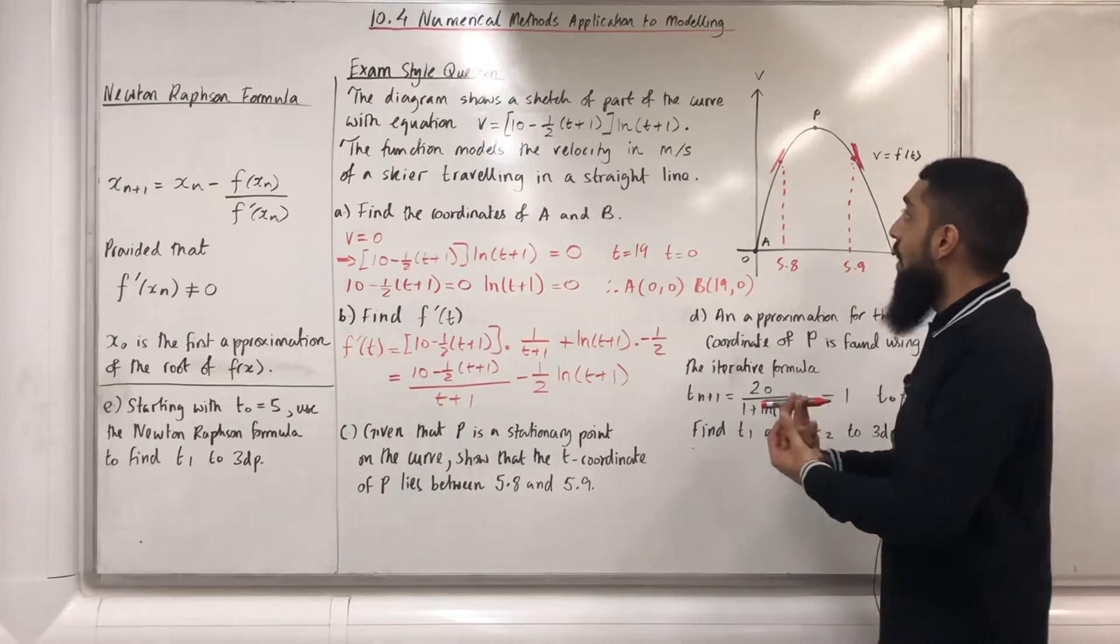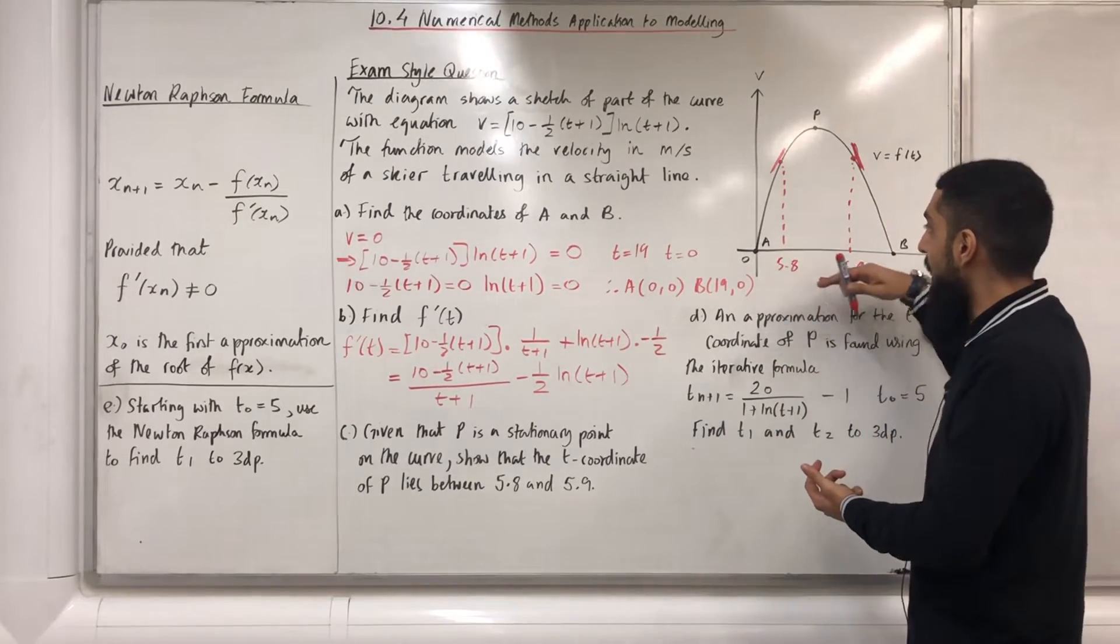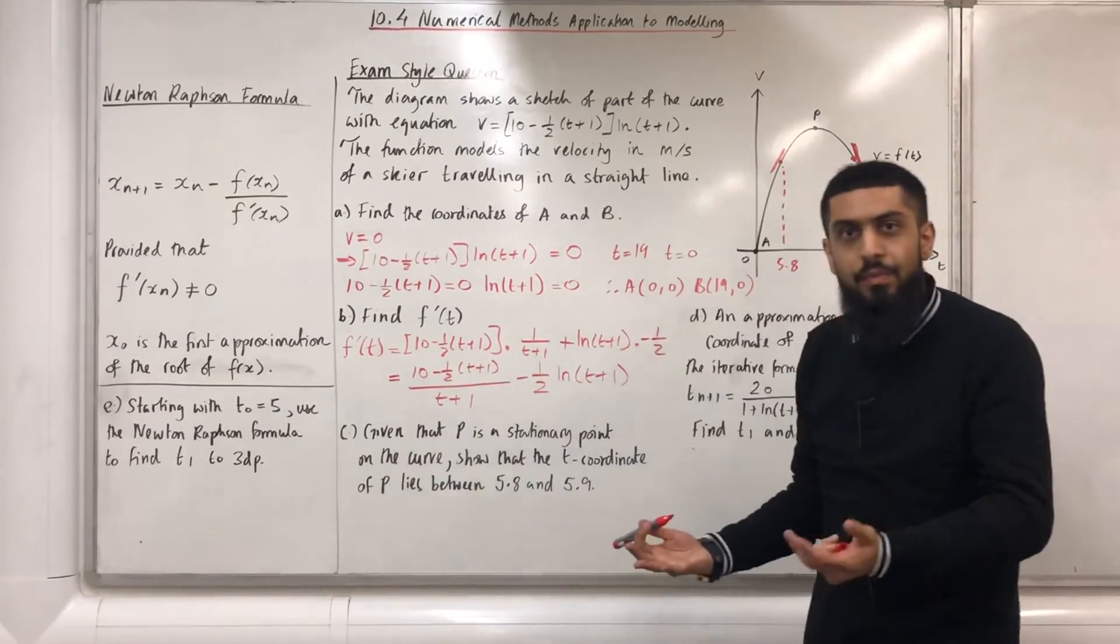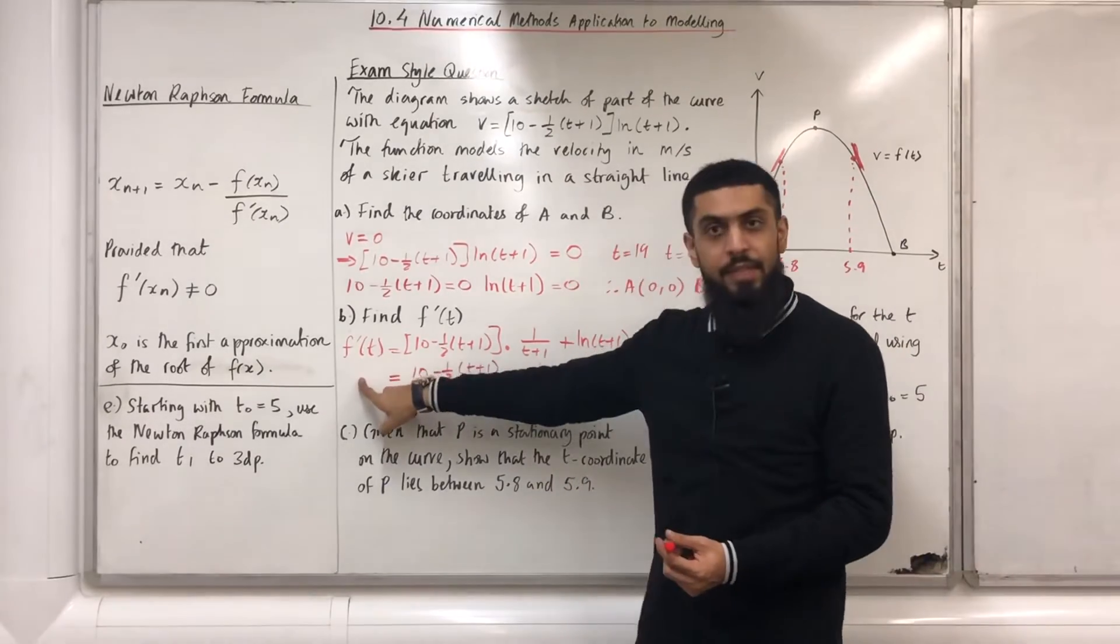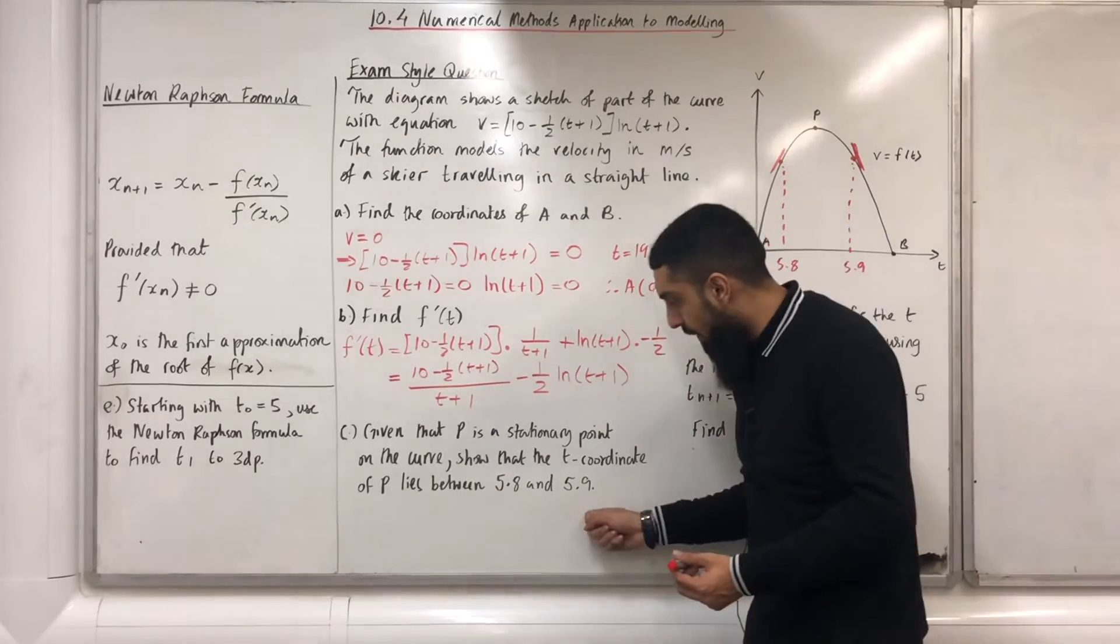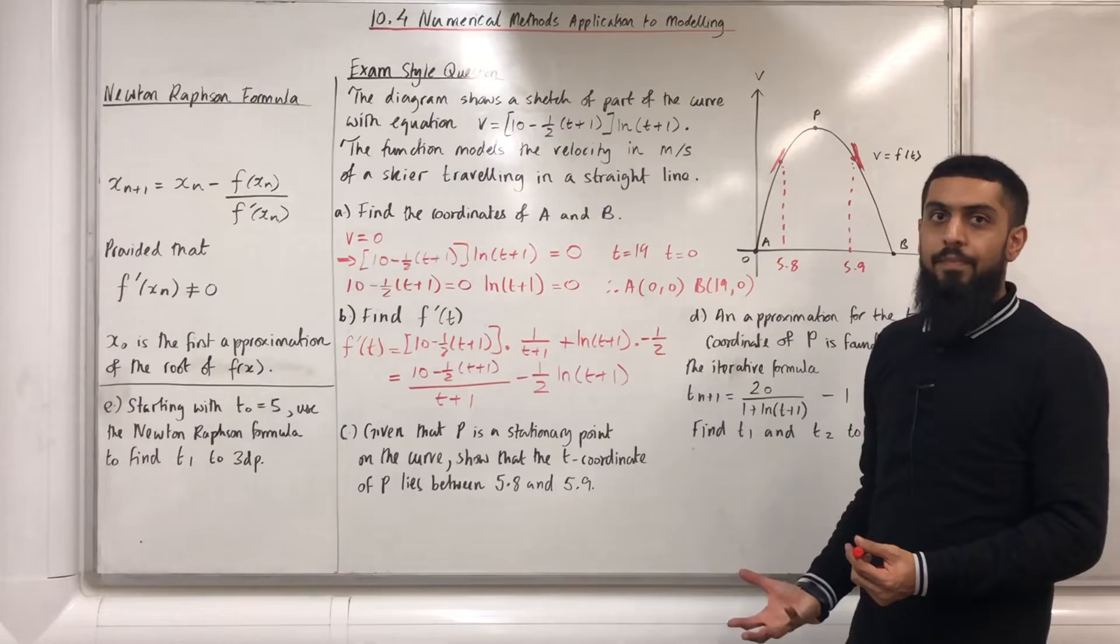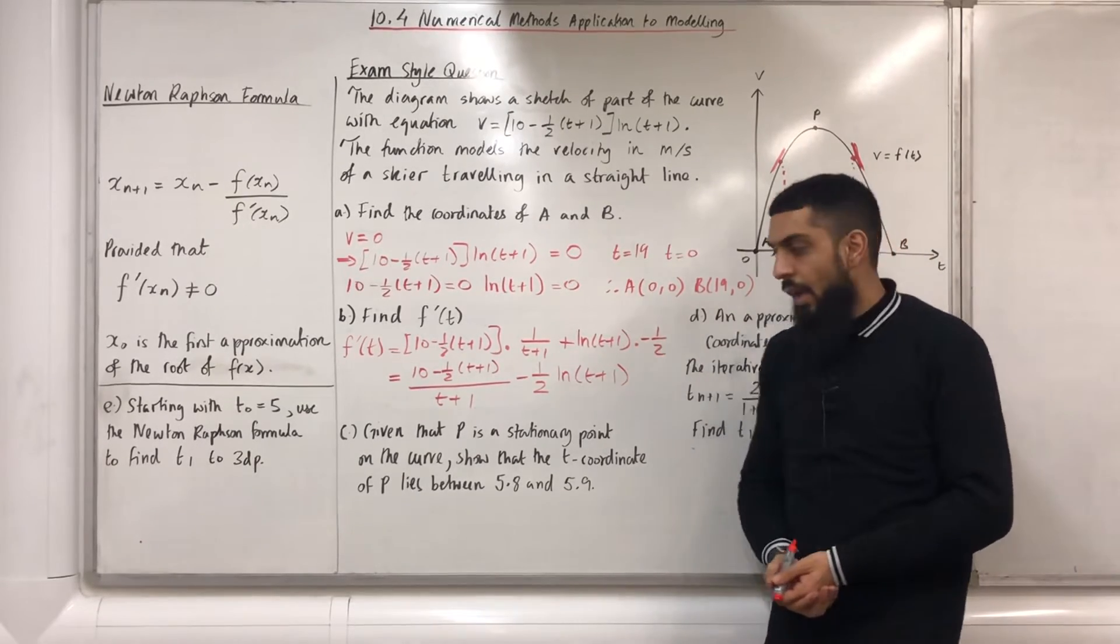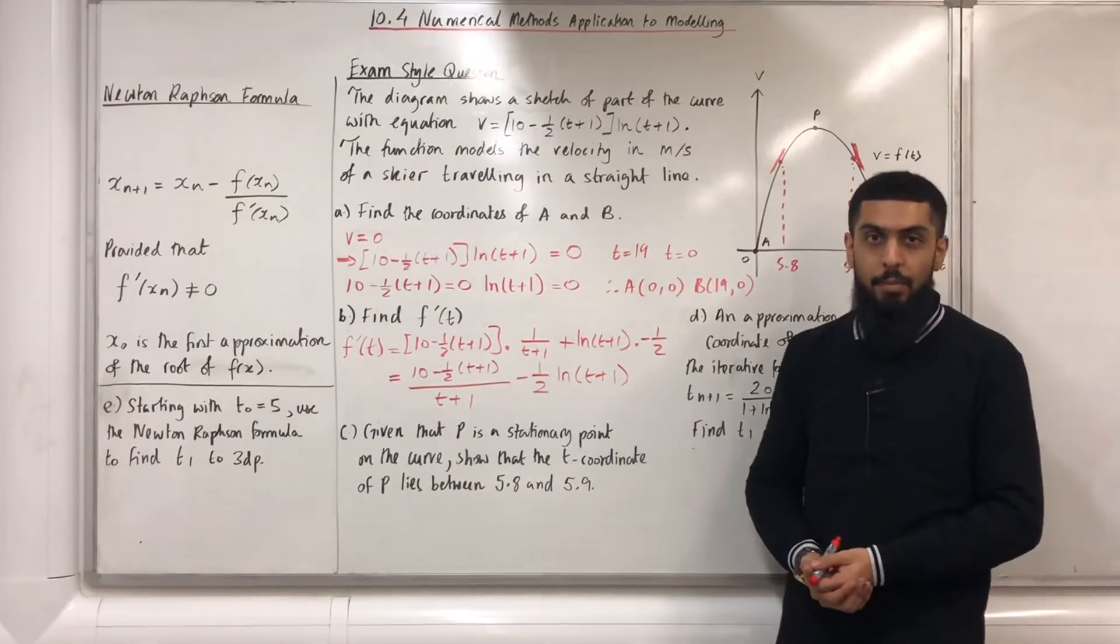I can see that there is a positive gradient over here and a negative gradient over here, and therefore, there must be a stationary point between t = 5.8 and t = 5.9. So what do I do? What do I write down? Well, I substitute t = 5.8 into f'(t). I write down what I get. Then, I substitute t = 5.9 into f'(t). Write down what I get. There will be a change of sign, after which I can conclude that the t coordinate of P lies between 5.8 and 5.9.